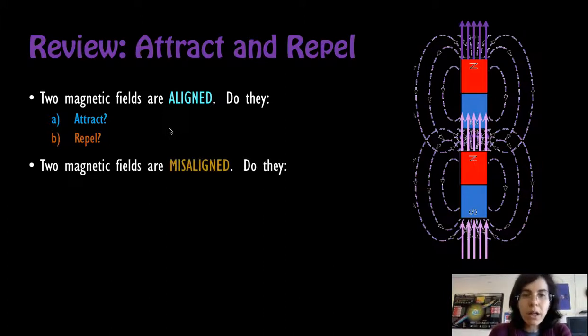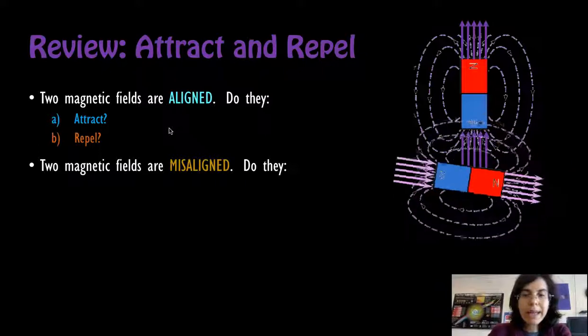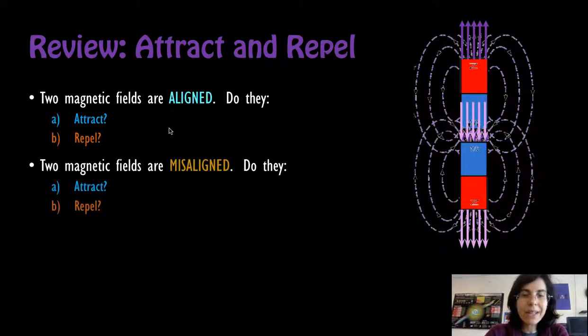Now, what about misaligned? Rotate your magnet and its associated magnetic field the other way. Let's see where is north, where is south. Do they attract? Do they repel? Again, make a quick diagram, sketch a few notes, pause, and press play when you've all come to your conclusions.